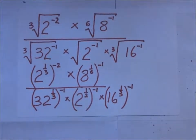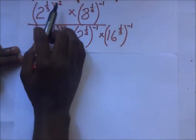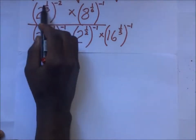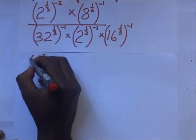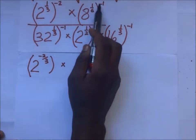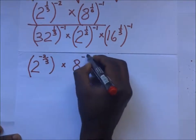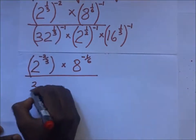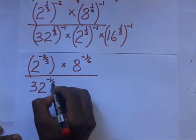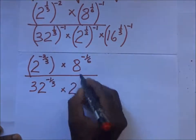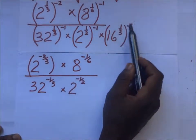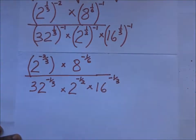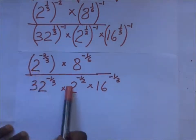So proceeding: 2 to the power a third times negative 2 gives 2 to the power negative 2 over 3. Multiplied by 8 to the power — a sixth times negative 1 gives 8 to the power negative 1 over 6. Then divided by 32 to the power negative 1 third. Multiplied by 2 to the power negative 1 half. Then a third times negative 1 gives 16 to the power negative 1 over 3. Now let's try and make these indices look the same.